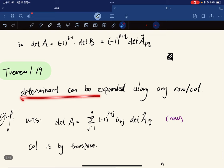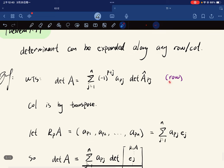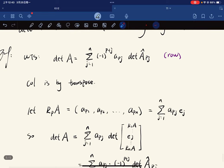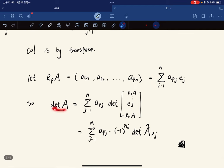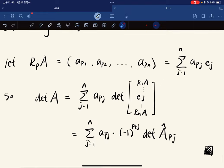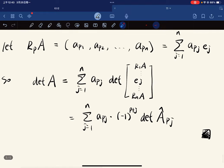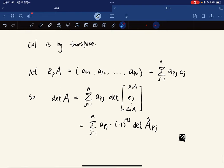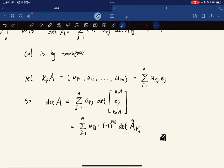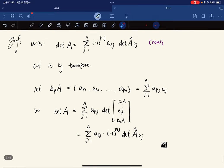So determinant can be expanded along any row and column. So we just want to show that it holds for rows. Column is by transpose. So if the rows of a are this, the row p of a is equal to this, which is the sum of this. So determinant of a should be equal to this. Now each of those is equal to those. And this is precisely our formula. All right. So that's it.